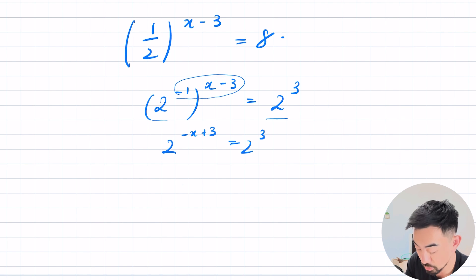Index laws says I multiply so in the power I'm going to have minus x plus 3 is equal to 2 to the power of 3. Now the base is the same I can equate the powers so minus x plus 3 is equal to 3. So minus x is equal to 0. So x is equal to 0.